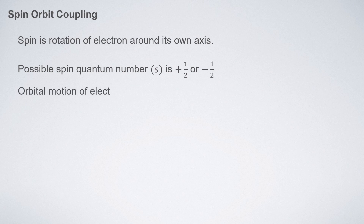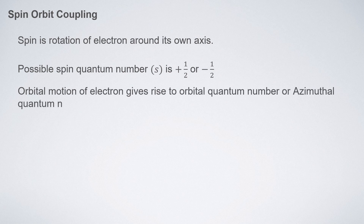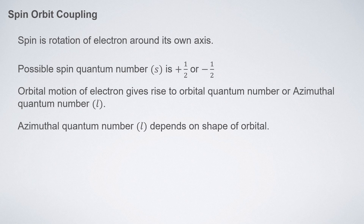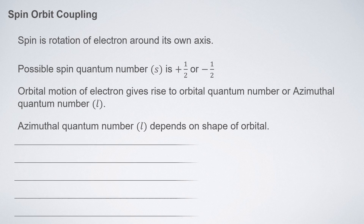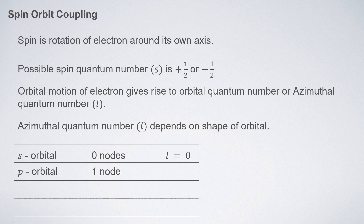Due to the orbital motion of the electron, the orbital quantum number arises, also known as the azimuthal quantum number. Its value depends on the total number of angular nodes in the orbital — in simple words, the shape of the orbital. For s orbitals, which are spherical with no nodes, the azimuthal quantum number l is zero. For p orbitals, which have one node, l is one.